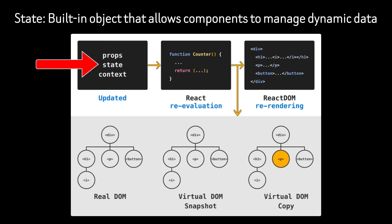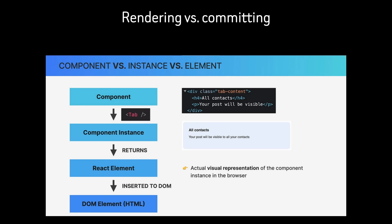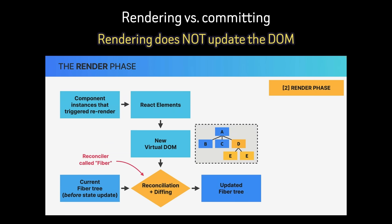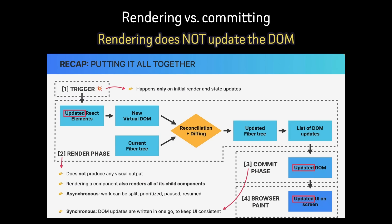Now back to React. One of the most important ideas for deep React understanding is that rendering does not update the DOM. Rendering is the phase where React calls your components and builds the element tree, also known as the virtual DOM. The DOM is updated later during the commit phase. Because rendering may happen multiple times and may even be aborted in modern React, it must be pure. Rendering must not fetch data, modify the DOM, register event listeners, or start timers. Render functions should do one thing only: describe the UI.